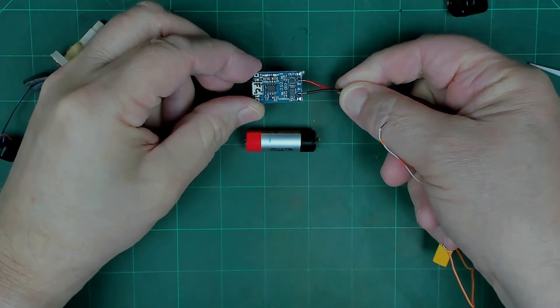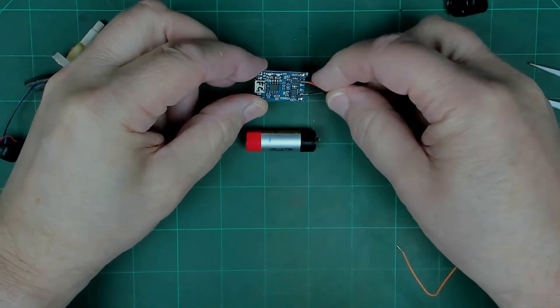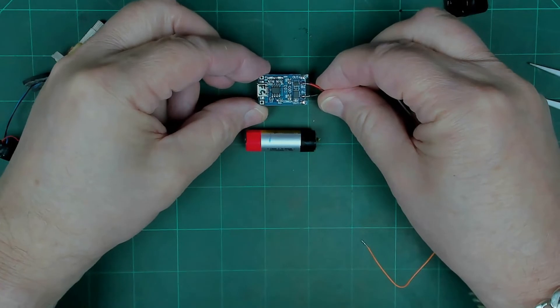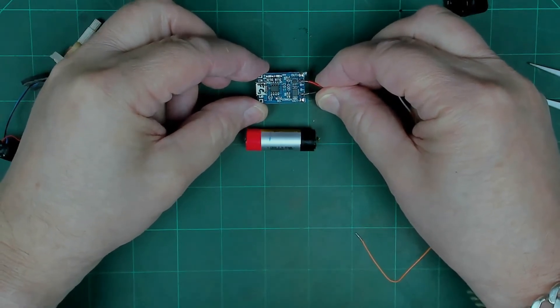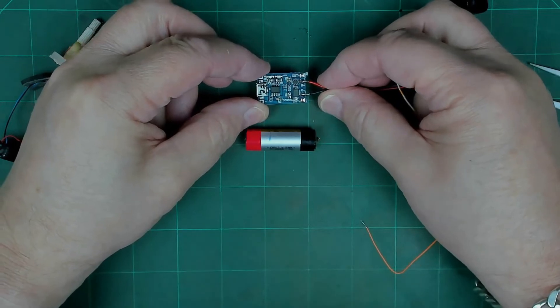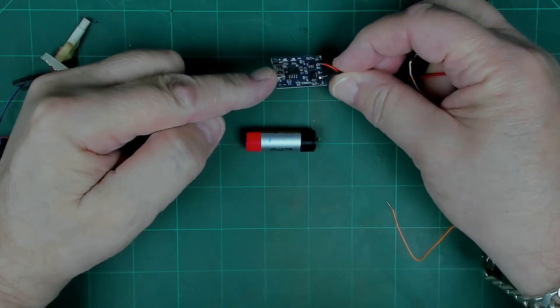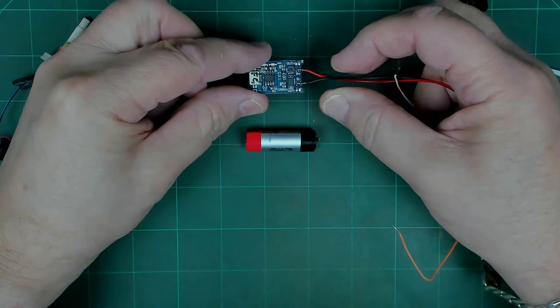Now you can get these little circuit boards very simply off eBay, quite cheaply. I tend to buy 10 at a time when I'm doing little projects like this. You can put standard USB 5 volts in there.